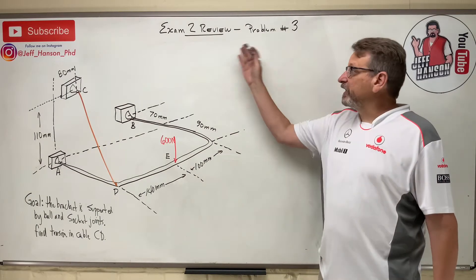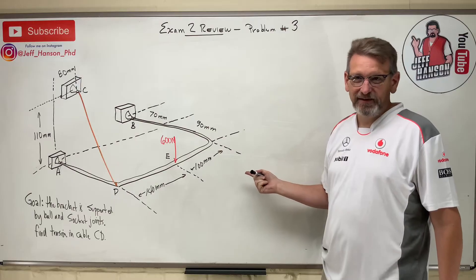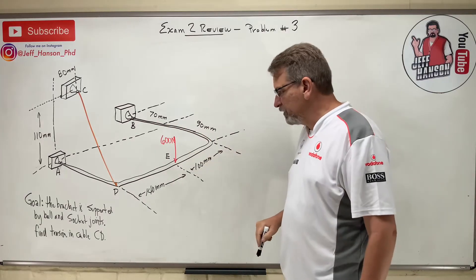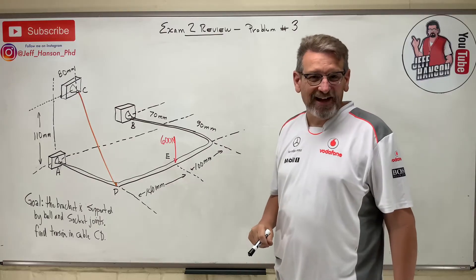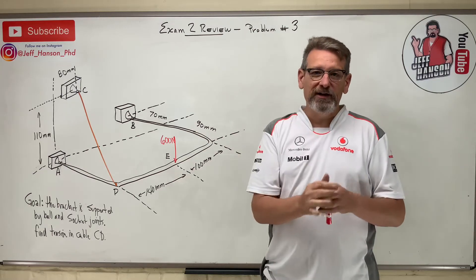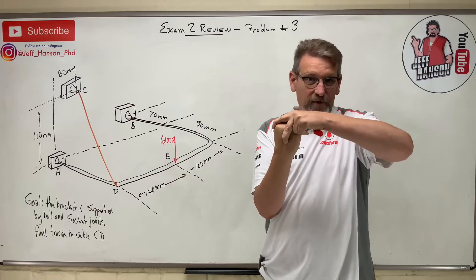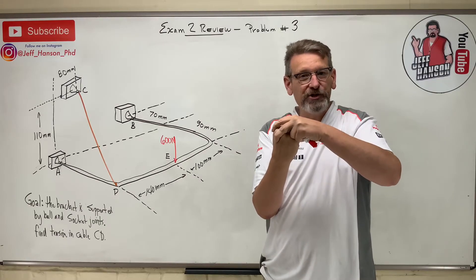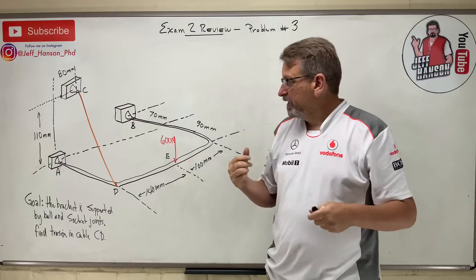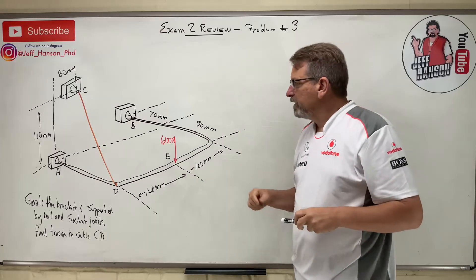We're back for exam two review, problem number three. This is a 3D reaction force problem. The bracket is supported by ball-and-socket joints — I like to think of those as the trailer hitch joint on the back of your car. A ball sits in a socket, so you can't move it in x, y, or z. But it will rotate around all three axes, so ball-and-socket joints have force reactions but no moment reactions.